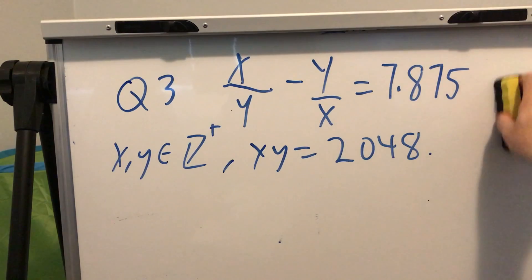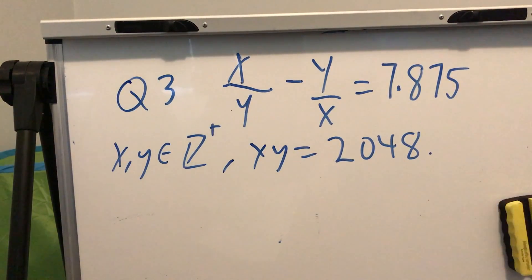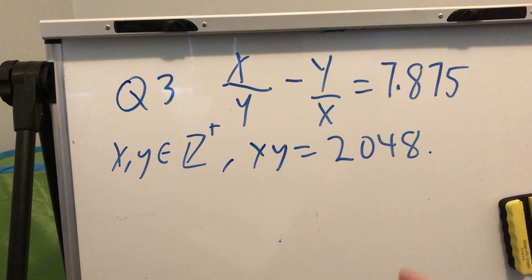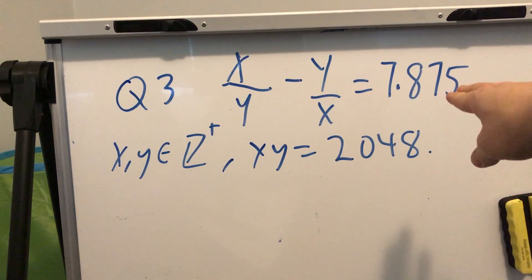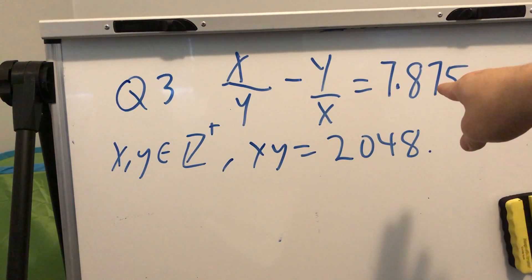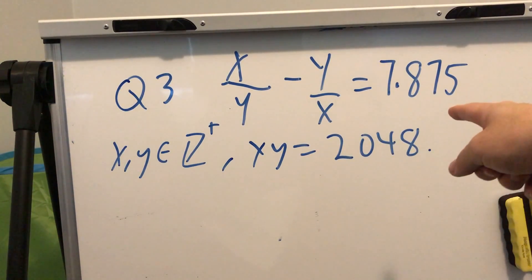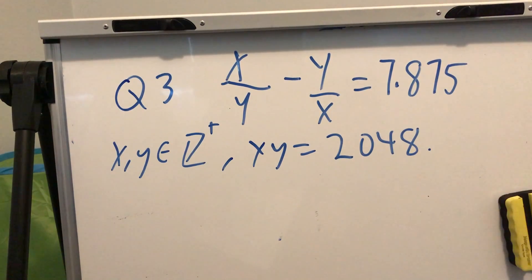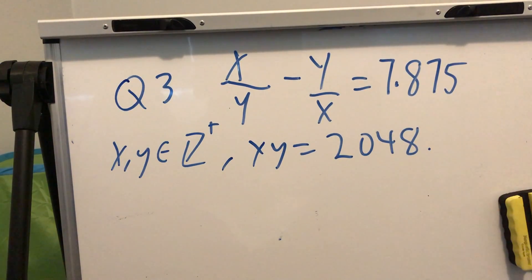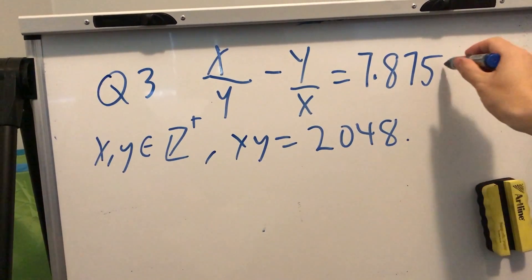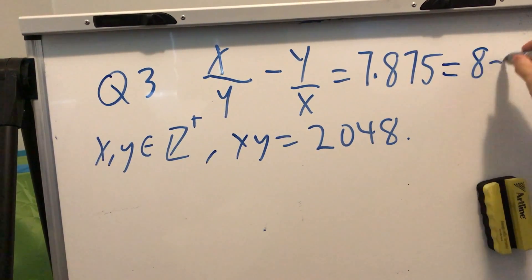So it kind of looks messy because you have a decimal, and it looks like something not nice is happening. But if you look at the actual decimal, it's something related to eighths, right? So it's seven and seven eighths. And another way of saying that, that's kind of in tune with the question, is that it's equal to eight minus an eighth.